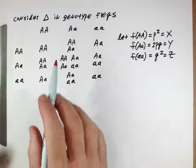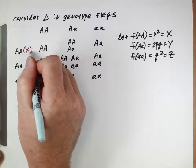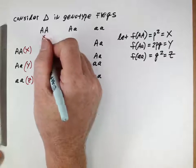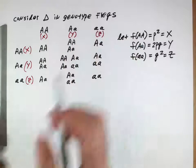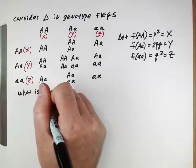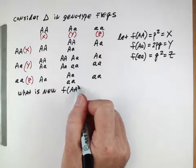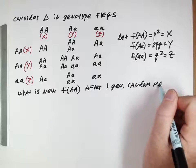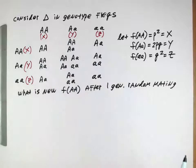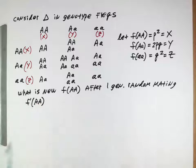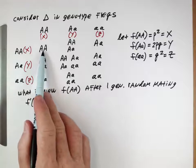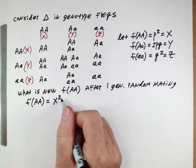How frequent are those matings? They depend on each of those frequencies. The frequency of this genotype was x, frequency of this genotype was y, frequency of this genotype was z — that's what we defined earlier. This is just to simplify some of the math we're about to do. When we want to think about how genotype frequencies change, we want to ask: what is the new frequency of this genotype after one generation of random mating? Random mating means they pair off according to their frequencies. Let's think about the new frequency of the capital A homozygote — where do new individuals with this genotype come from? They come from this mating here, and how frequent is that mating? That mating happens with that frequency.